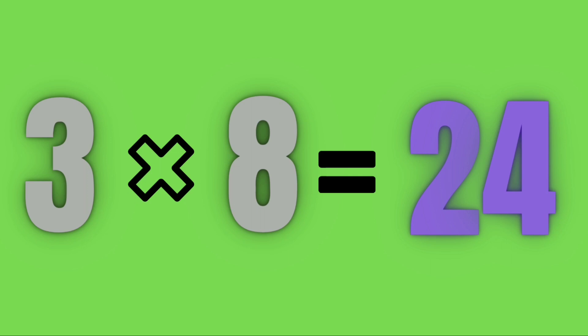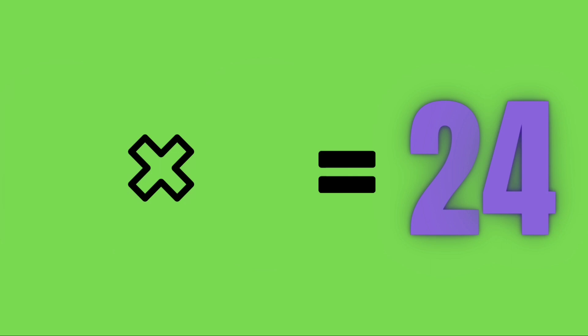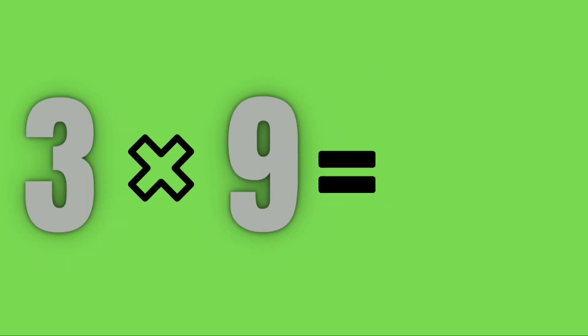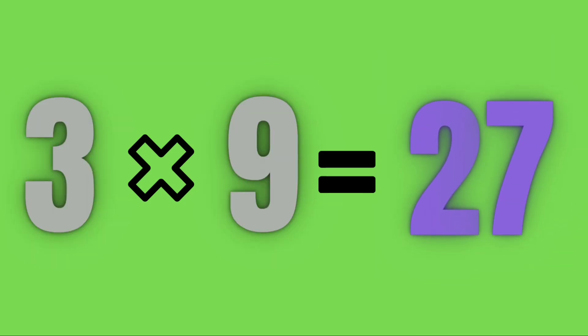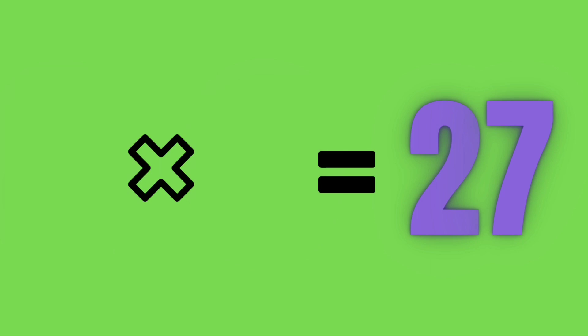Three eights are twenty-four. Three nines are twenty-seven.